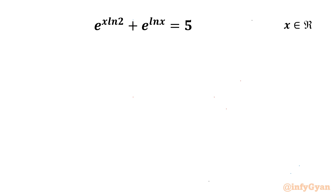Welcome back to NcGyarn, my dear friends. In today's video we are having one very interesting question from exponential equations. The given equation is e raised to the power x·ln 2 plus e raised to the power ln x, equal to 5. And we are going to calculate real solutions only.